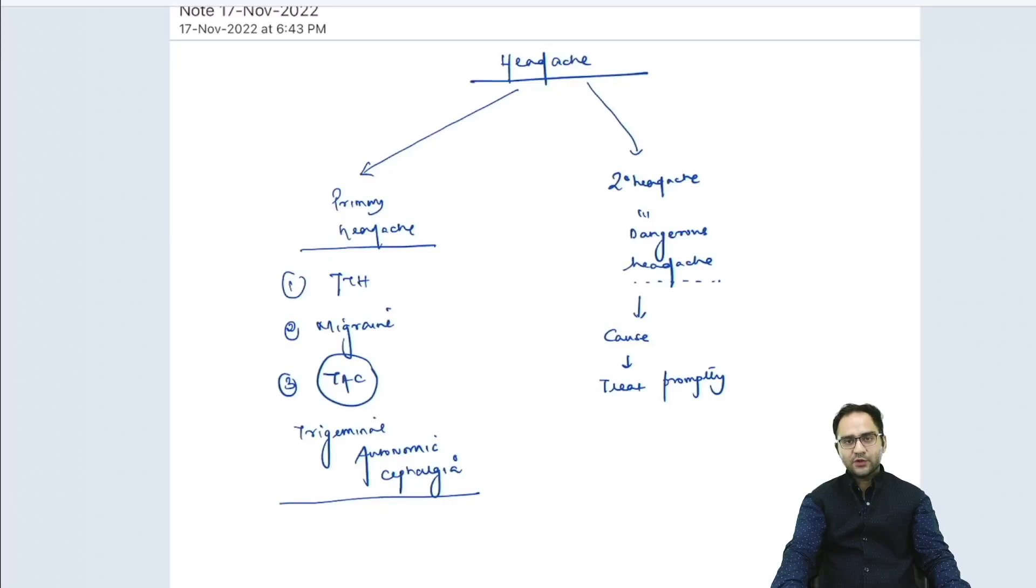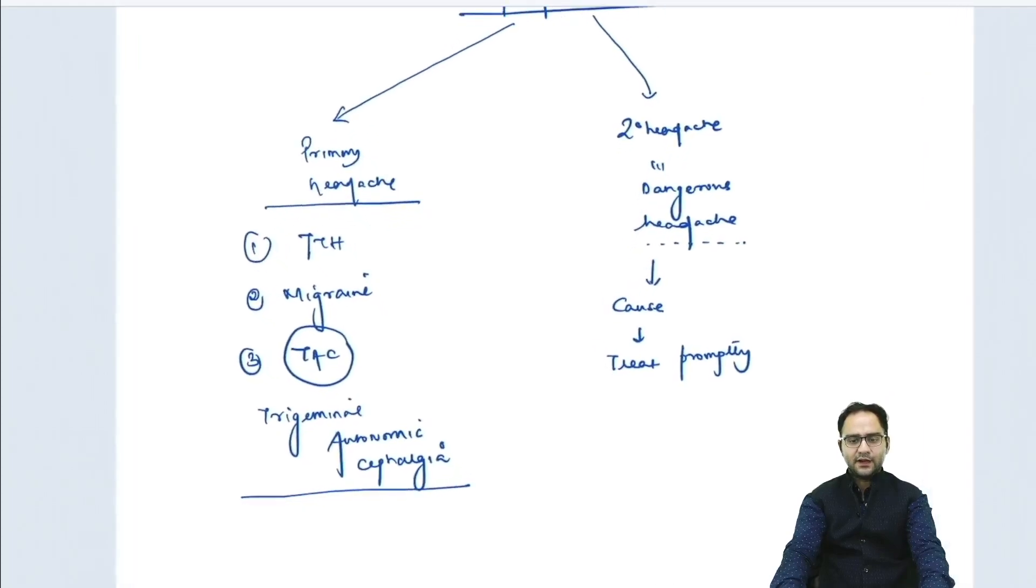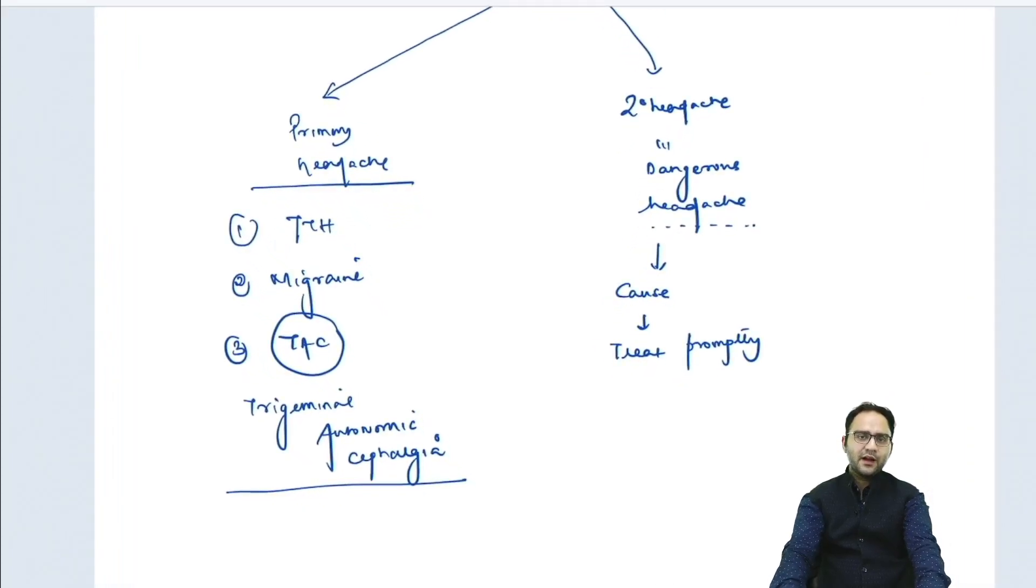Headache is divided into two broad categories. One is the primary headache and another is the secondary headache. The secondary headache is basically the dangerous headache. Why is it called dangerous? Because the cause can be sinister. You need to treat the secondary headache very promptly. Otherwise it may lead to the death of the patient.